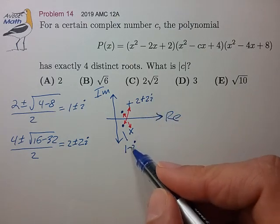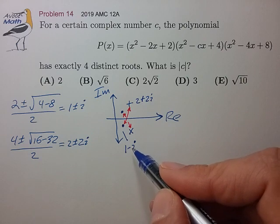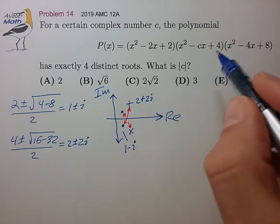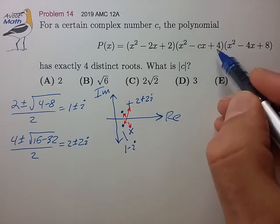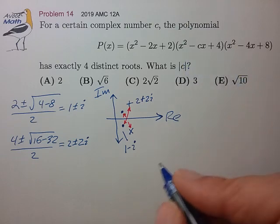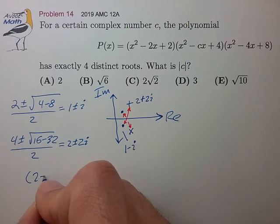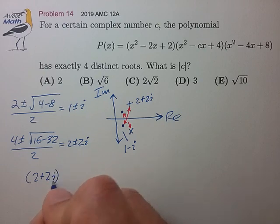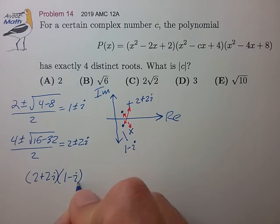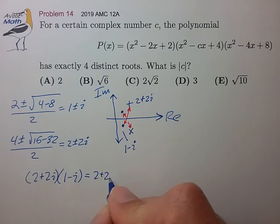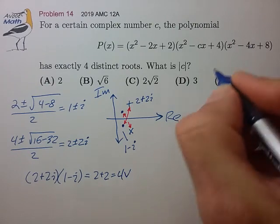And let's just check that when we multiply them we're going to get a product that's consistent with the 4 in this factor. So we have that 2 plus 2i times 1 minus i equals 2 plus 2, which is equal to 4. So that checks out.